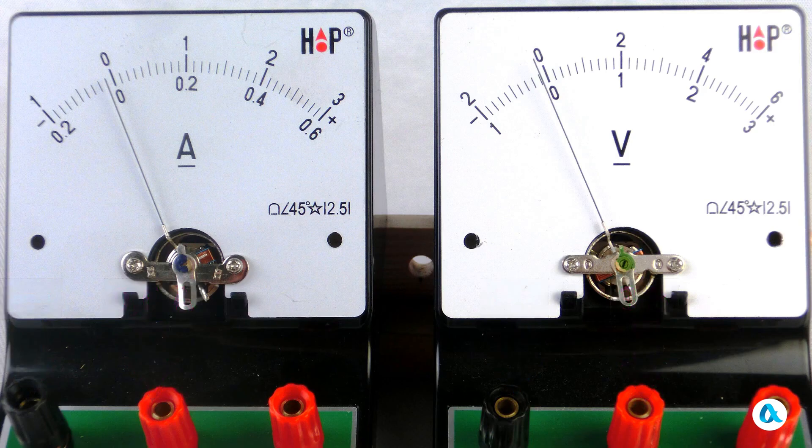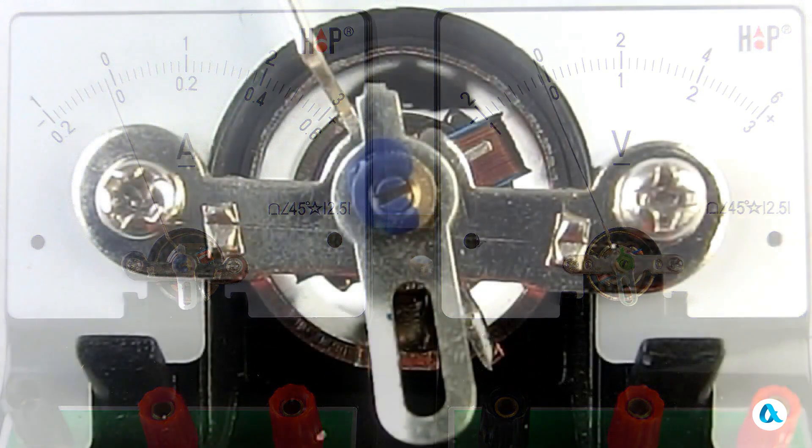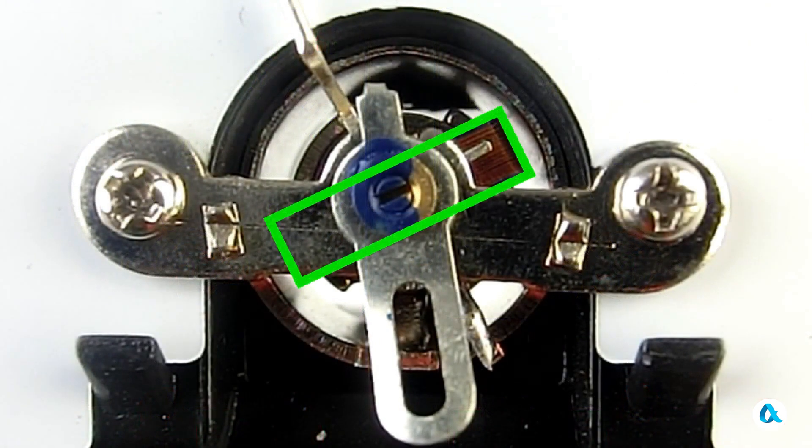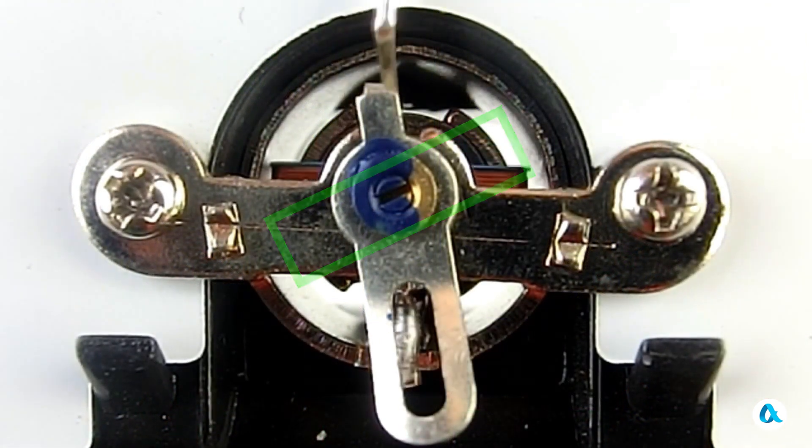I have removed the front covers and we can see that the two instruments are constructed absolutely identically in their basic parts. A coil made of very thin wire is mounted on the moving part of the instrument.